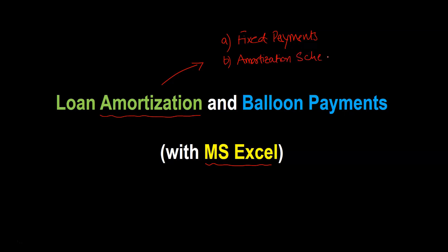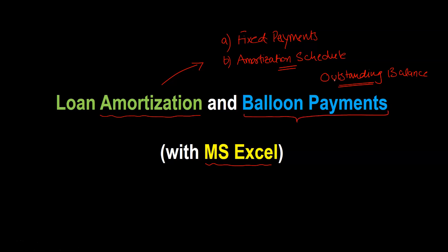The amortization schedule basically tells you that over time, if you're making these fixed payments, what portion is going towards the principal and what portion is going towards paying off the interest. It can also show you your outstanding loan balance at a specific point in time. This is helpful because you may want to make one big lump sum or balloon payment to retire the loan early. The complete amortization schedule helps you determine what that balloon payment will be. I'm going to show you how to do all of this using Excel with an example.